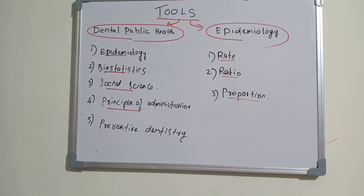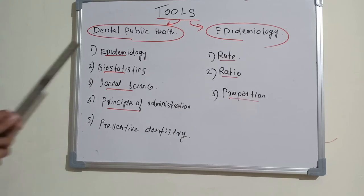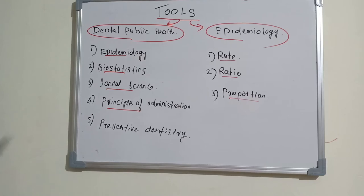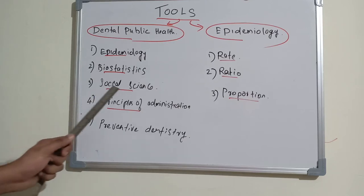From all this data, to reach a conclusion we need mathematical analysis — that is biostatistics. The third tool is social science. Since we are dealing with a large group of people, we need to understand sociology, psychology, and all other social aspects of the population.